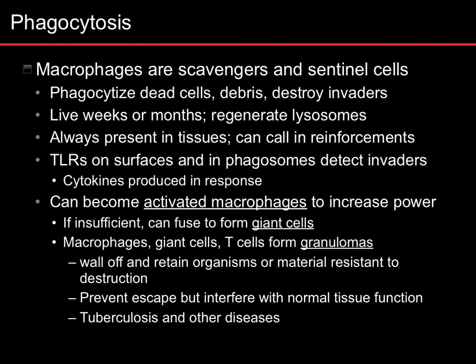The monocytes migrate out of the blood into the tissues, and they develop into macrophages during that process. They maintain TLRs on their surface and detect invaders. If they do detect an invader, they eat it. They produce cytokines in response. These cytokines will often activate basophils or mast cells to produce histamine and other inflammatory responses.